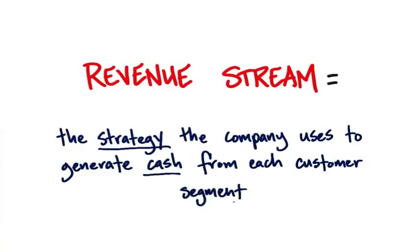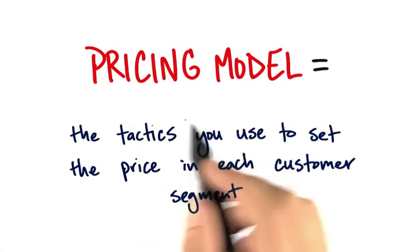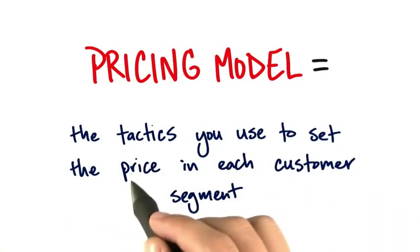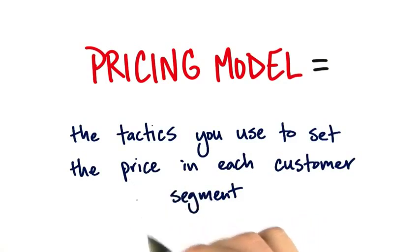So if you have multiple customer segments, you may have multiple revenue streams. We'll go into this in some detail, but let's define pricing. Pricing are the tactics you use to set the price, how many dollars or pounds, or is it free, in each of these customer segments.